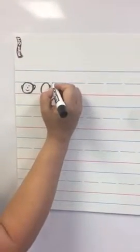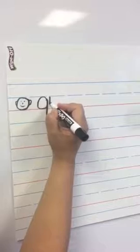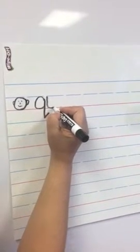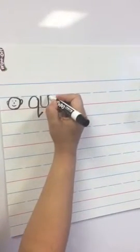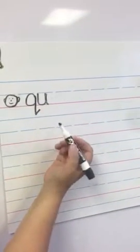And then we begin our second letter right next to the Q. We start at the top, we pull straight down, go underneath Smiley's chin, back up, and pull straight down to the bass line, and we have Qu.